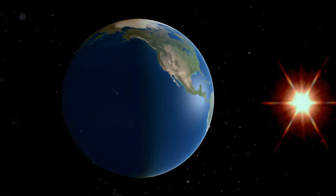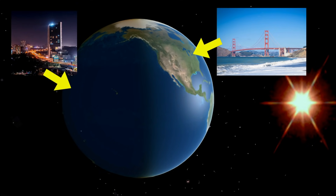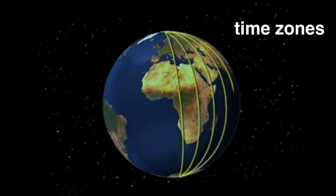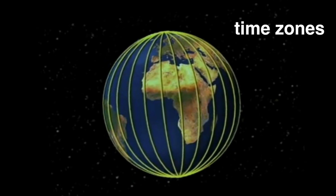So in summary, different places on earth have different times because the earth is round. While some people are facing towards the sun so it's daytime, other people are facing away from the sun so it's nighttime. Since there are 24 hours in a day, we've divided the earth up into 24 sections, or time zones, each one hour apart.